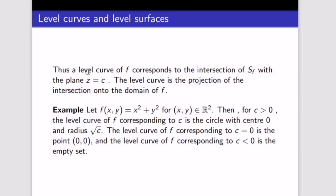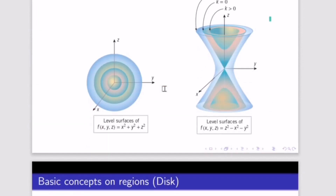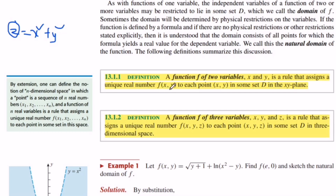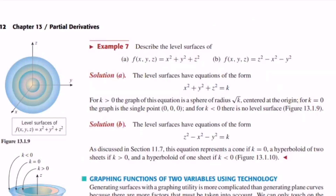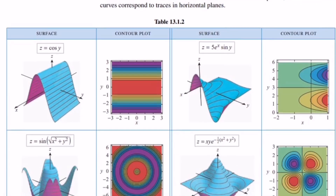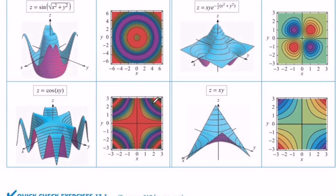The level curve of f corresponds to the intersection of the surface S with the plane z = c, and the level curve is a projection of that intersection onto the domain. Here are some visual examples: this is the level surface of one function and this is the level surface of another. The book shows both a contour plot and a surface plot — from the top, this is how it looks.